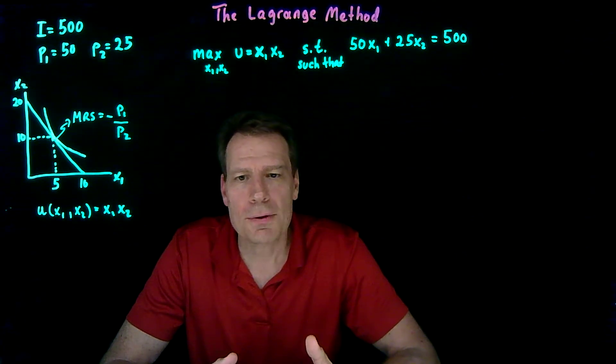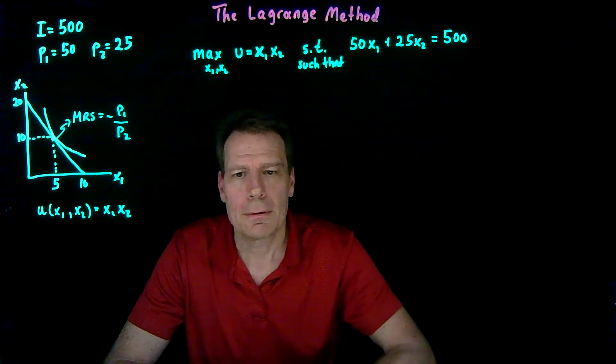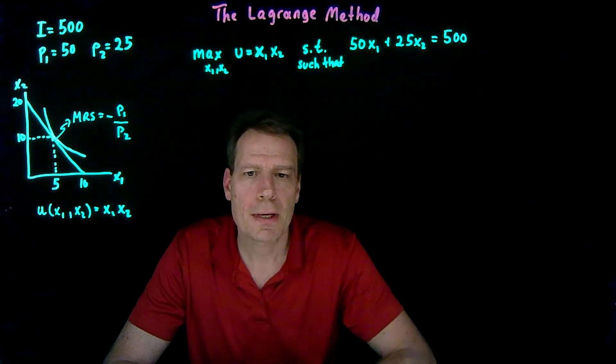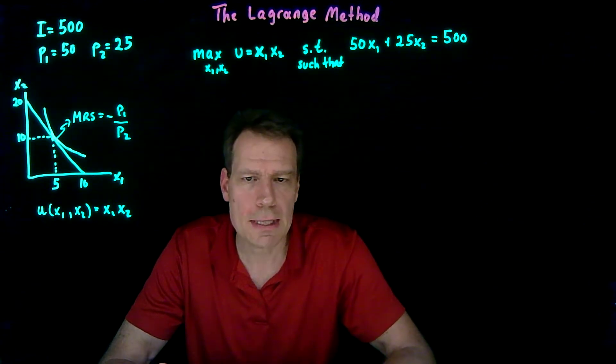Previously we said we had to set a derivative to zero because on the top of a hill the derivative is zero. And you're going to see in this method we're also going to set derivatives equal to zero for the same reason.